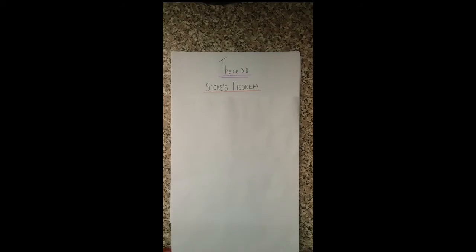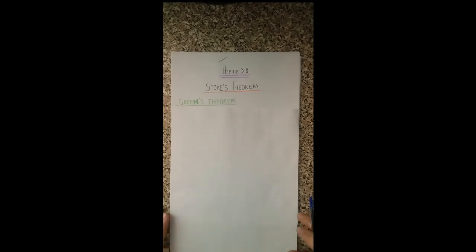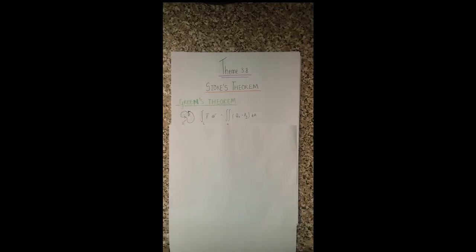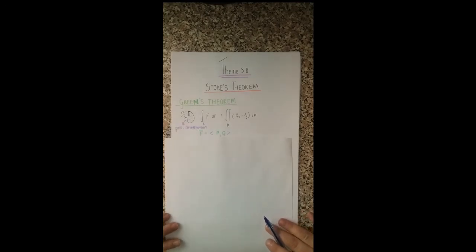Welcome to Theme 3.8 — today we're doing Stokes' theorem. Previously we've done Green's theorem, which relates a line integral of a vector function along a curve to the area that it bounds. For Green's theorem, the curve needed to be positively orientated and the partial derivatives of Q with respect to x and P with respect to y needed to be continuous in the region D.